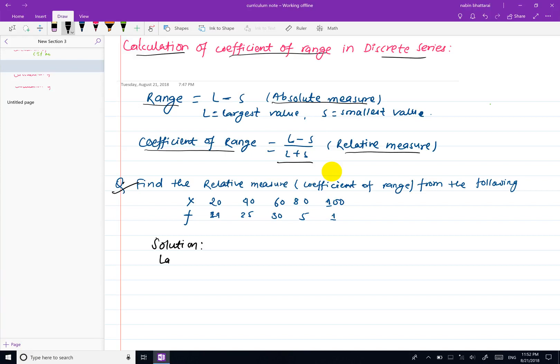The largest item is 100. The smallest item value is 20.